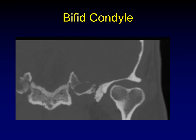A bifid condyle is really a normal variant of development in which both sides of the condylar head develop separately and don't fuse normally. So instead of a nice, smooth, rounded central contour to the condyle, you have sort of a divot in the center. Most of these patients are asymptomatic, although this can predispose to premature degenerative disease.